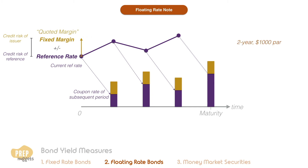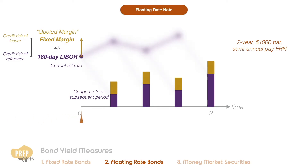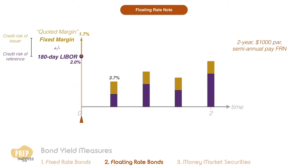For example, a two-year $1,000 par semi-annual pay floating rate note can have its reference stated as the 180-day LIBOR rate. At issuance, the 180-day LIBOR is 2% and the quoted margin for this issuer is fixed at 1.7%. So at issuance, we can already determine the coupon rate that will be paid half a year from now, and that is 3.7%.